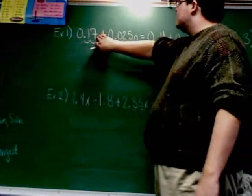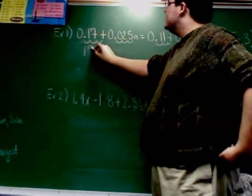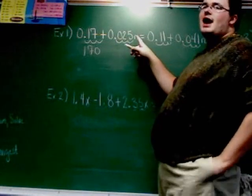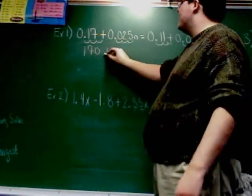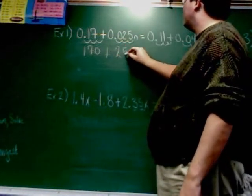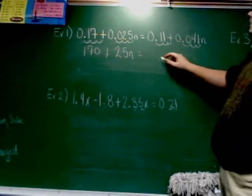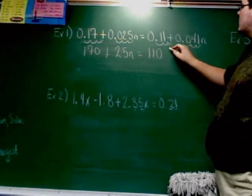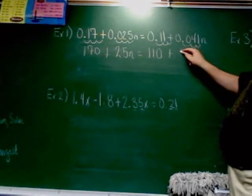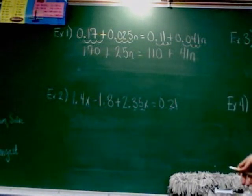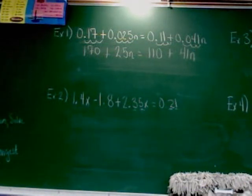Empty spots get zeros, so 0.17 becomes 170. Then 0.025n becomes 25n. On the right side, 0.11 becomes 110, and 0.041n becomes 41n. And look at that — the decimals are gone. The thing we didn't like to start with is now gone.